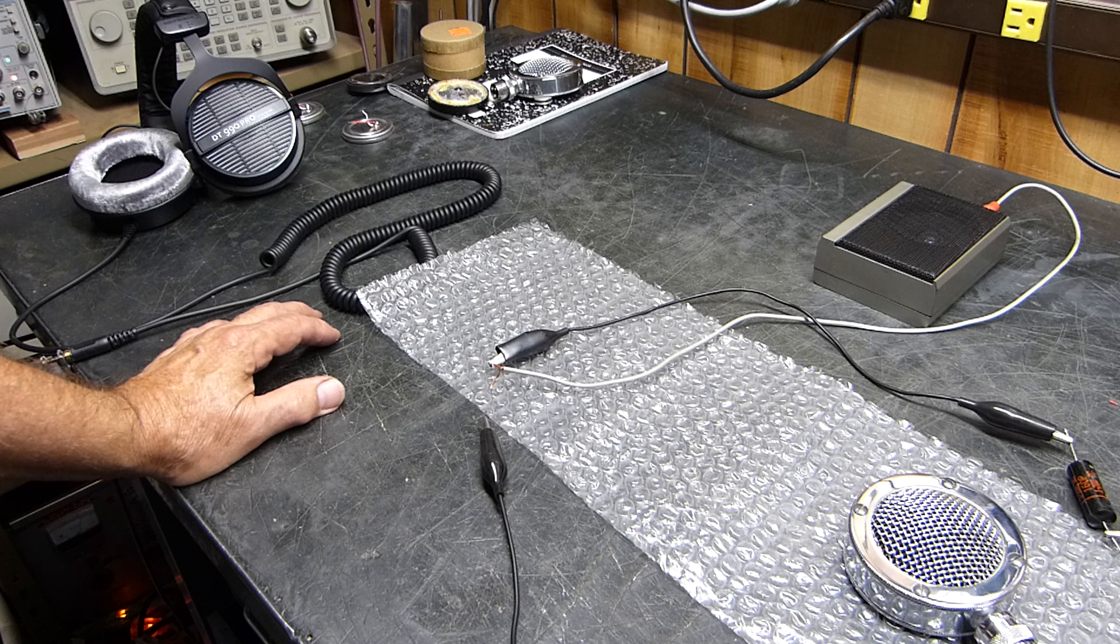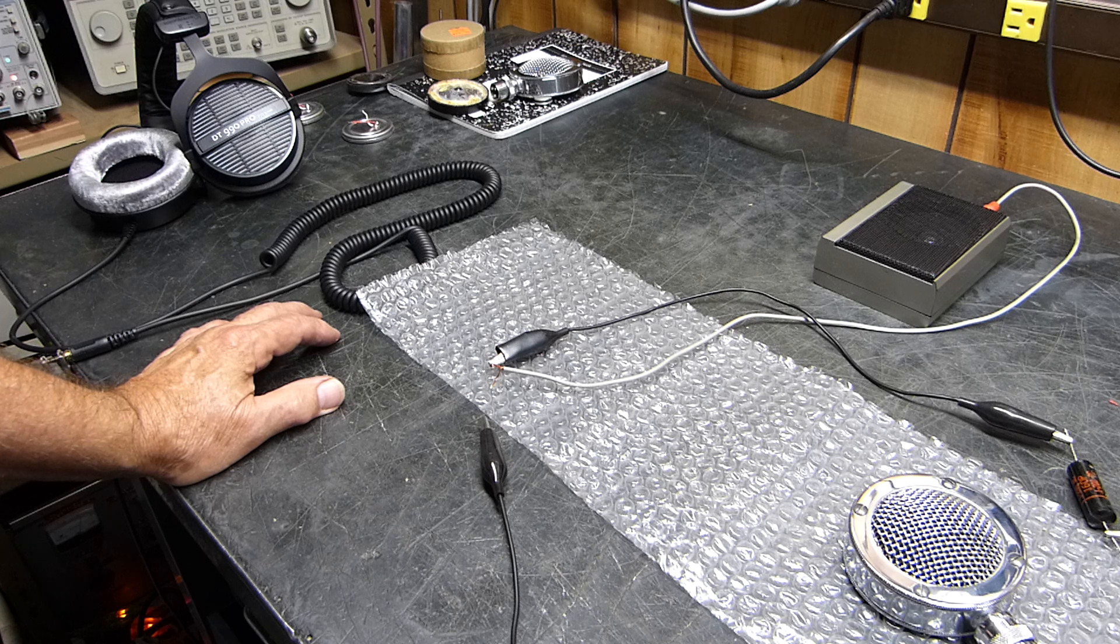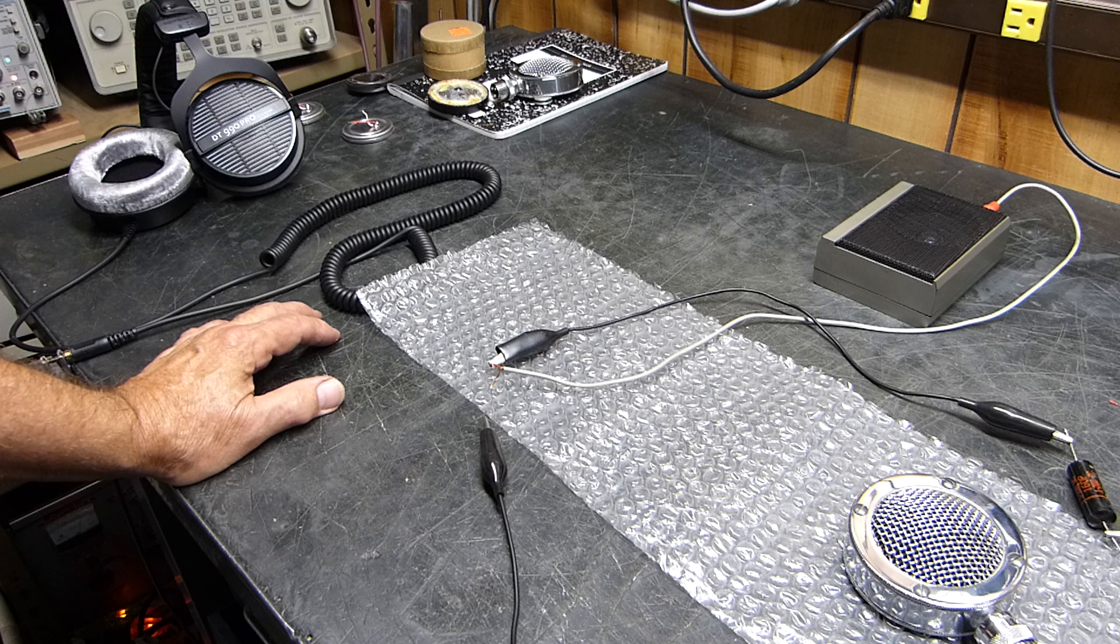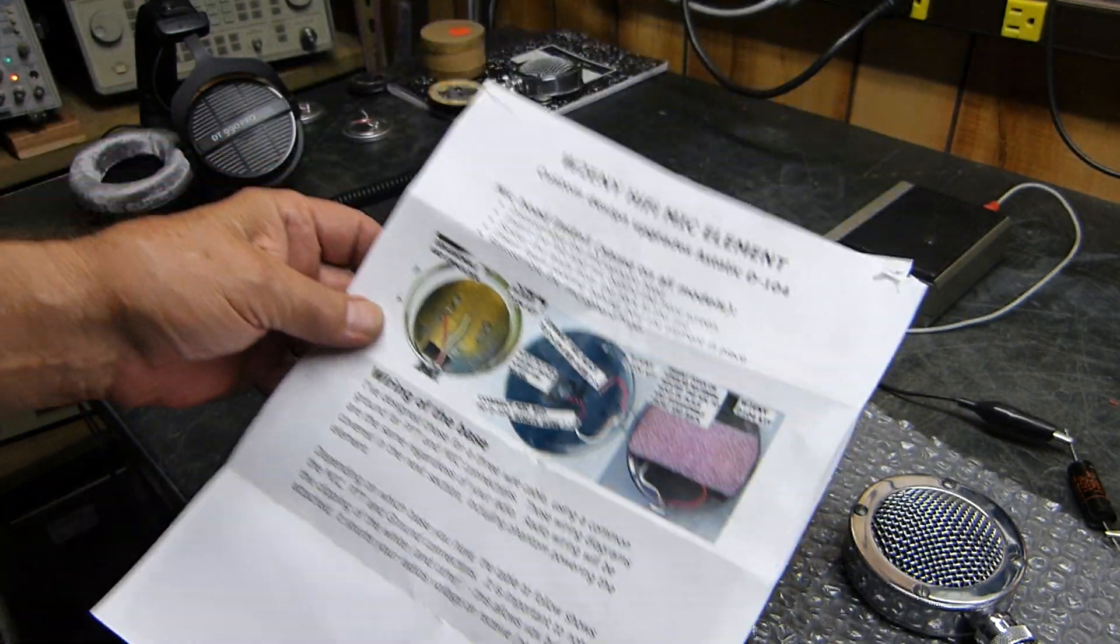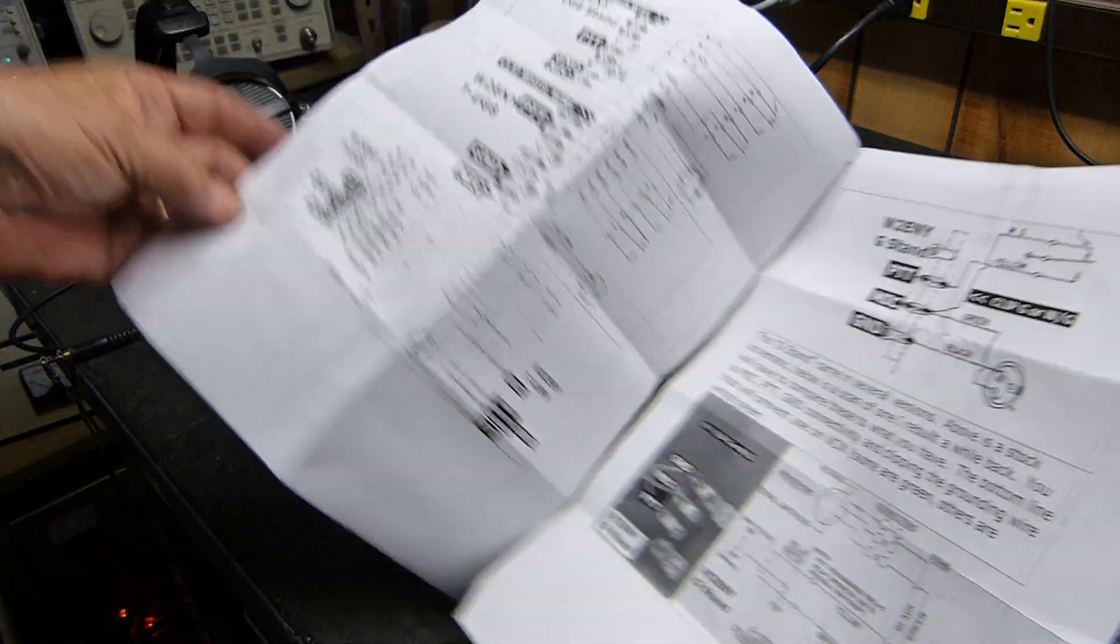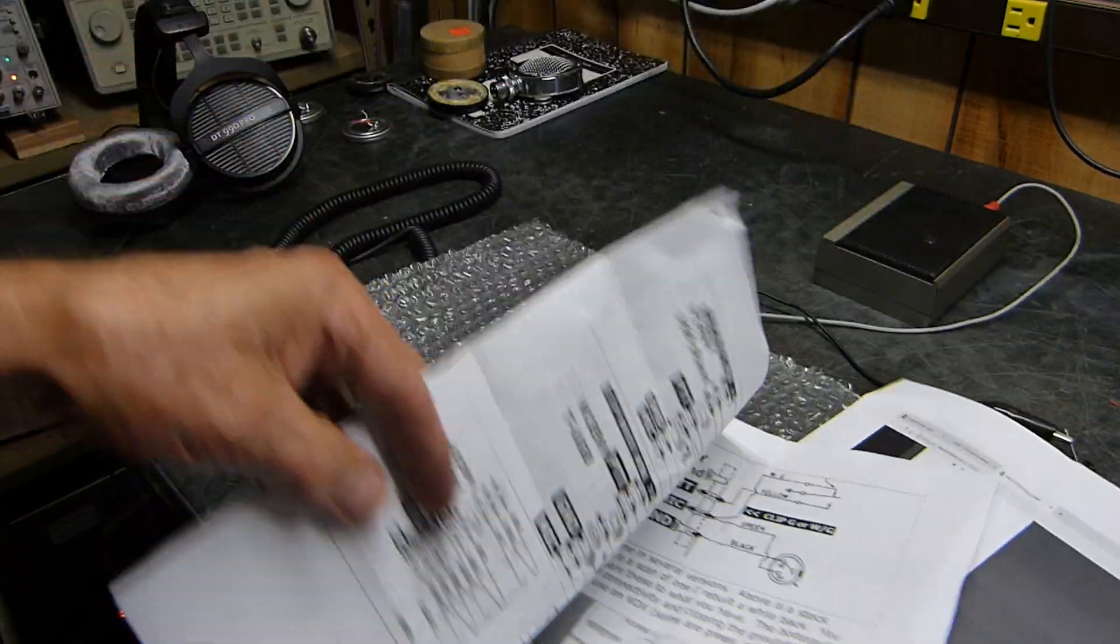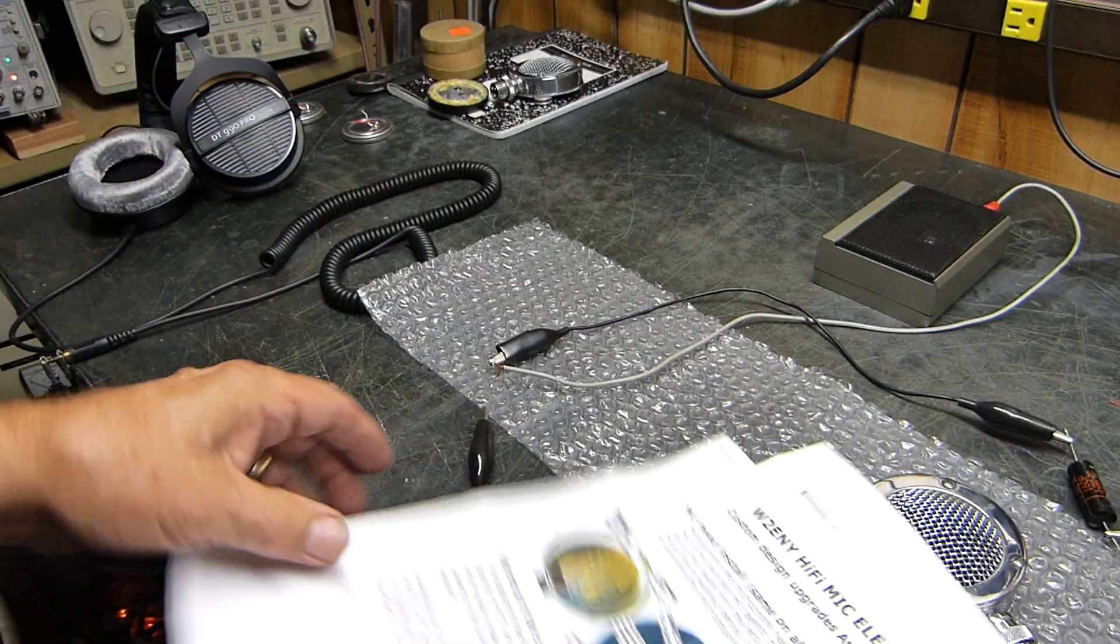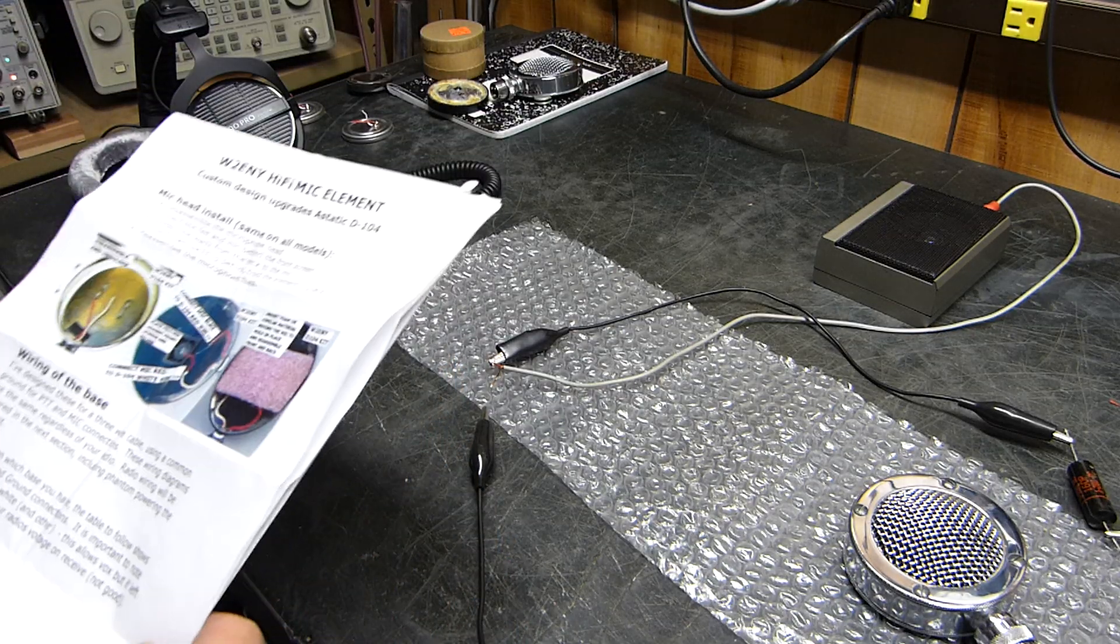I actually bought one of the electret type condenser mics to replace them. Here's what I bought off eBay. He shows how to wire it to everything except the old boat anchor stuff like the Astatic microphone stand, so I had to figure it out myself.